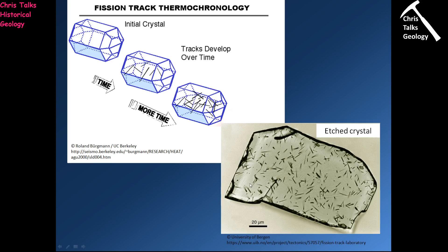All you have to do is take your crystal and count how many of these fission tracks — these lines — you can see. Simply count how many there are and you will know how long it would have taken to form that many fission tracks. Therefore you have dated your crystal, and once you date the crystal, you've dated the rock.